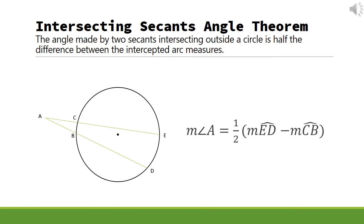Thus, one-half the difference of the measures of arc ED and arc CB is equal to the measure of angle A.